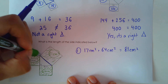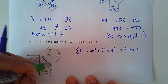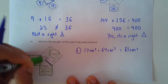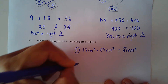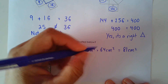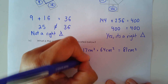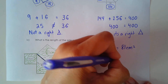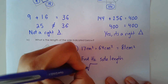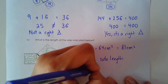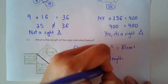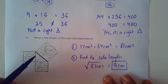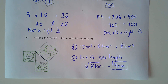What we're looking for is this side. This is a square — what times what gives us 81? We're looking for the side length, so we take the square root of 81 centimeters squared, which gives us 9 centimeters. The length of the side here is 9 centimeters.